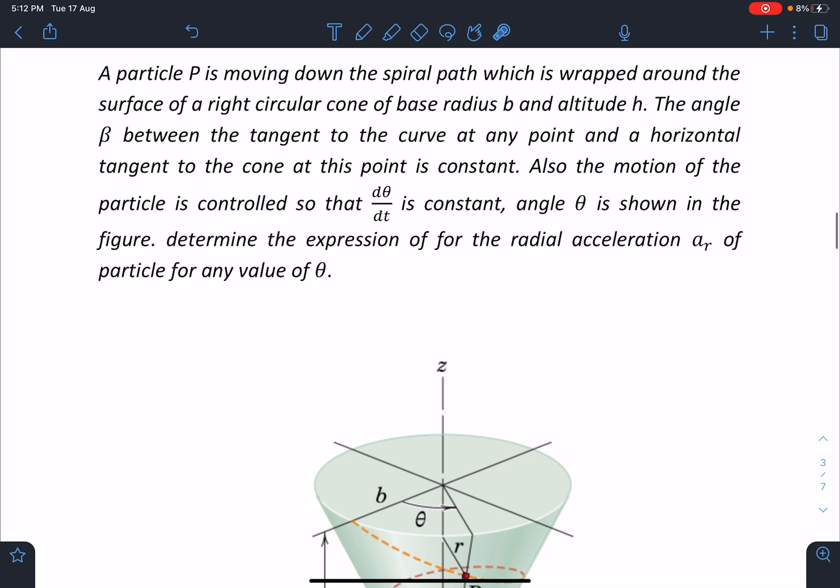Here is the problem statement: A particle P is moving down the spiral path which is wrapped around the surface of a right circular cone of base radius b and altitude h. The angle β between the tangent to the curve at any point and a horizontal tangent to the cone at this point is constant.